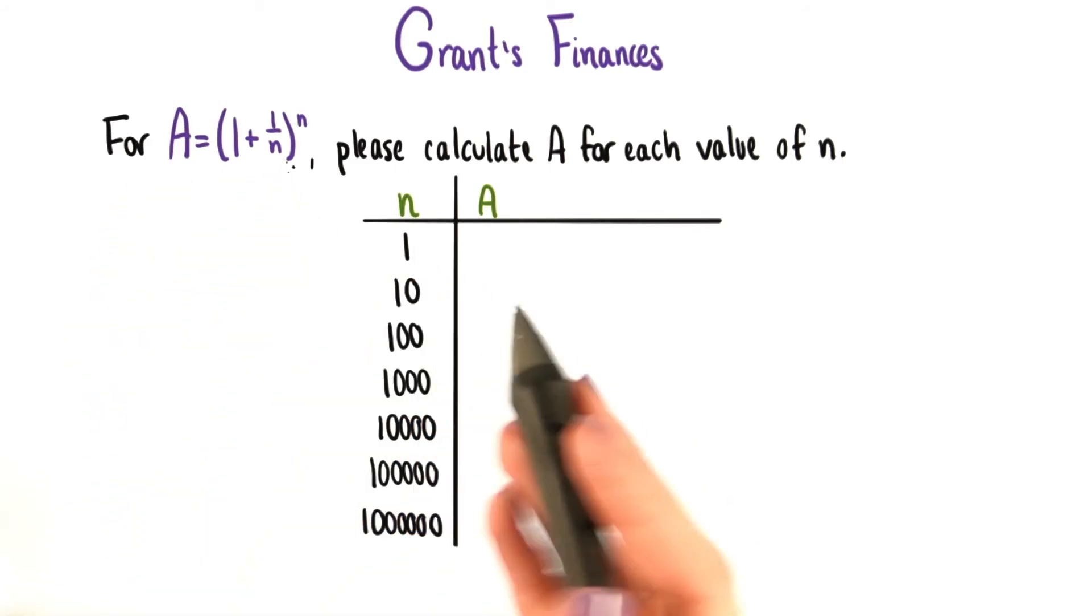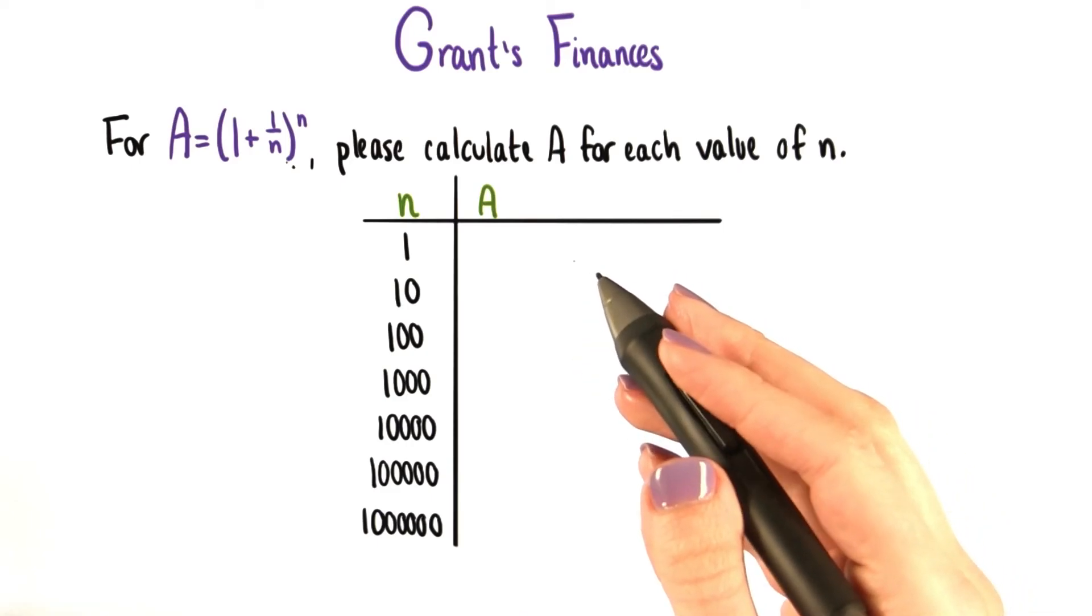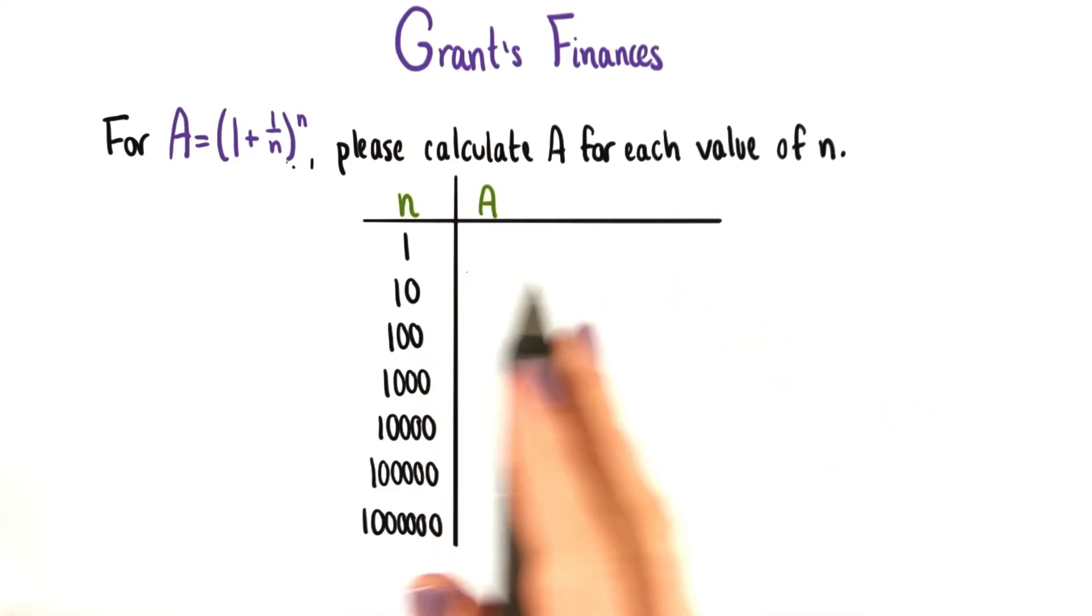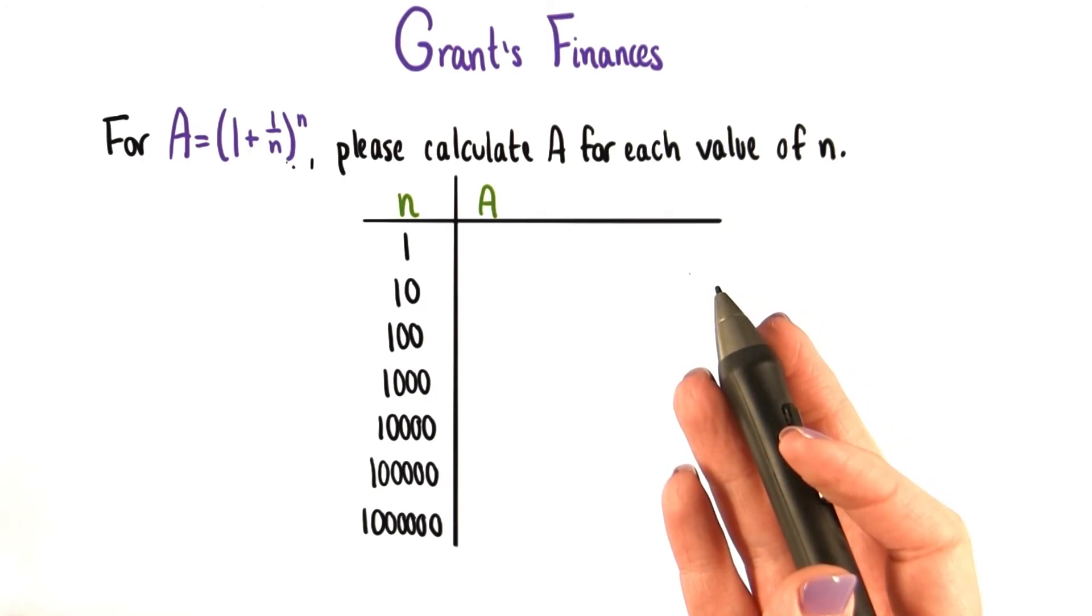Well, if we just set p equal to 1, r equal to 1, and t equal to 1, here's what we have. A equals 1 plus 1 over n, all to the nth power.